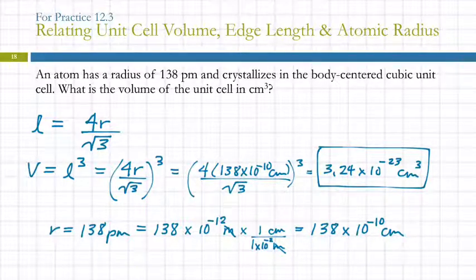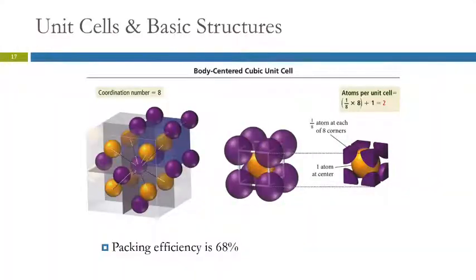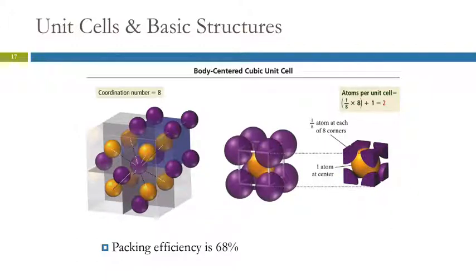One thing to point out: this body-centered cubic cell contains two atoms. We have the same eight corners — 8 times 1/8 is 1 — plus the one atom in the middle, making two atoms total.